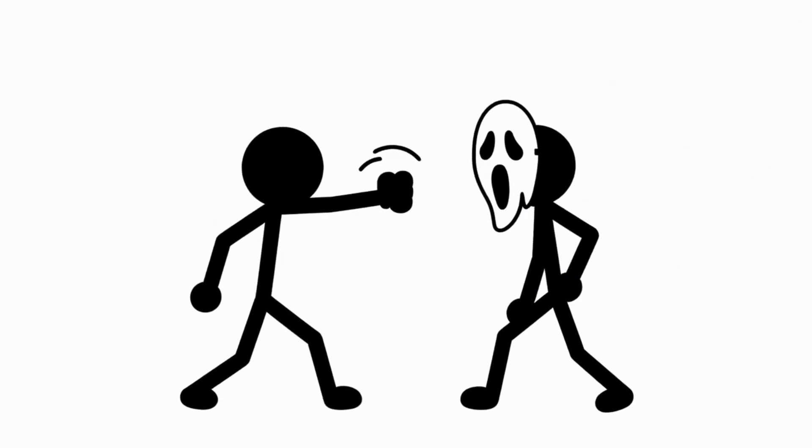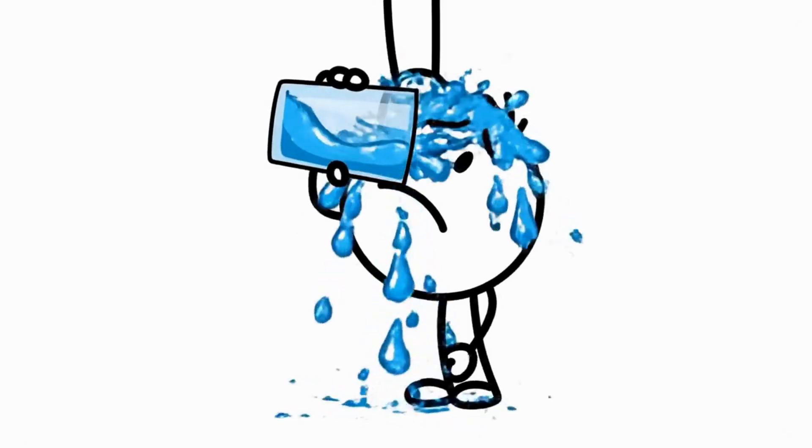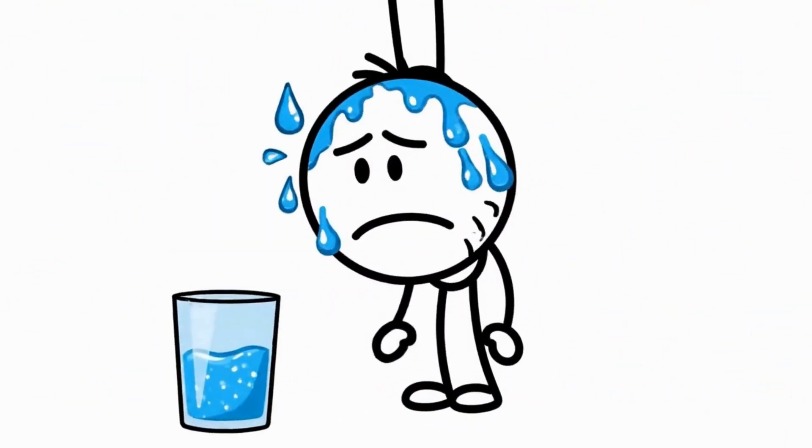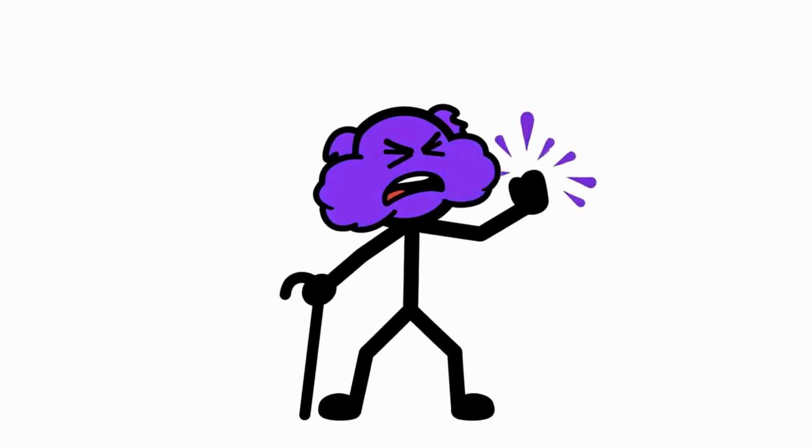People say getting scared cures it. It doesn't work, but at least you get to punch someone. We try drinking water upside down to fix it, which just makes us look like wet idiots. Holding your breath resets the carbon dioxide levels in your blood, calming the fish brain down.